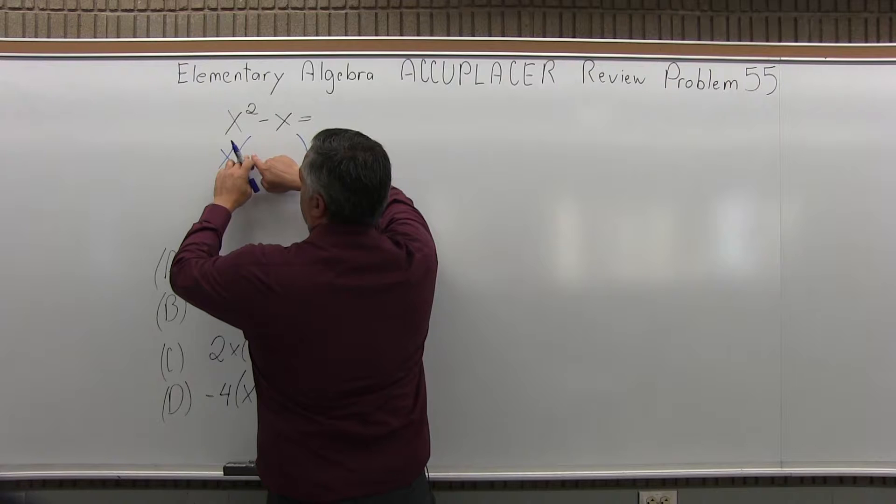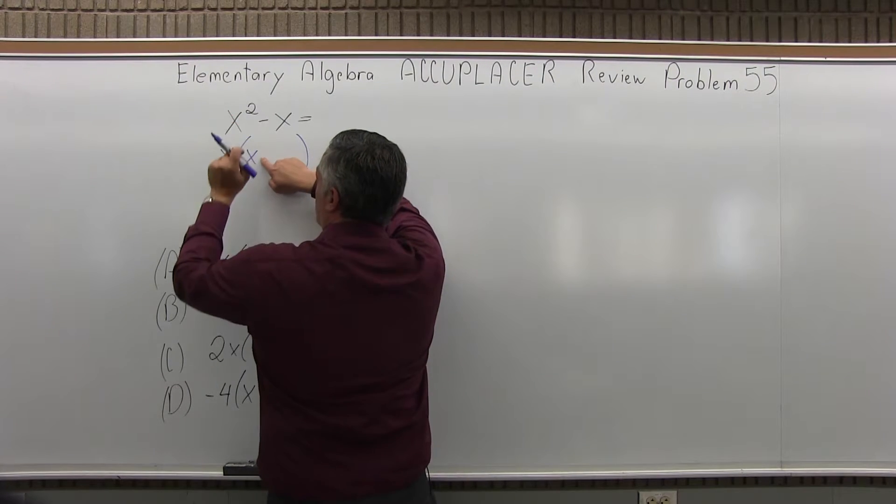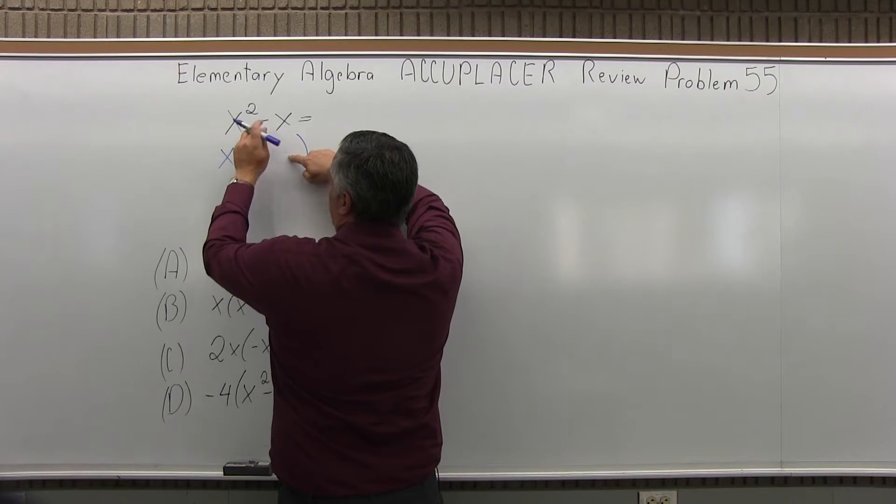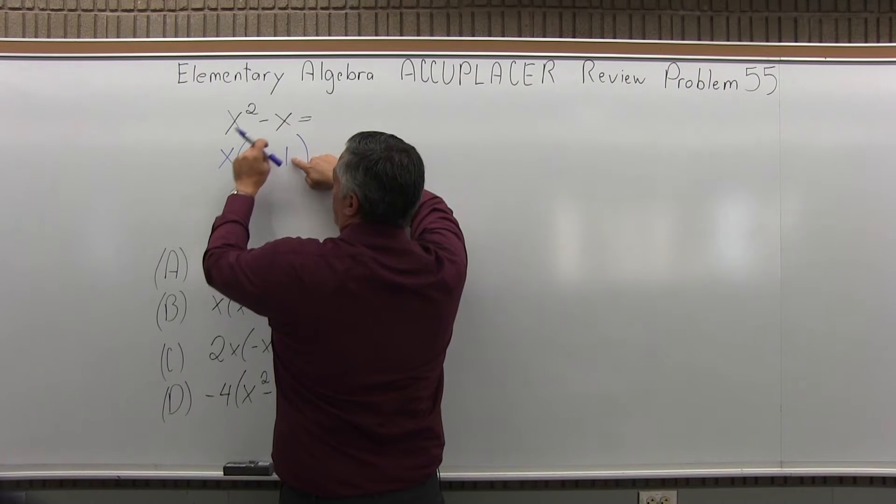So now in the parentheses, x times something is x squared. Well, x times x is x squared. And then x times something is negative x, and again pay attention to the sign, it would be x times negative 1 is negative x.